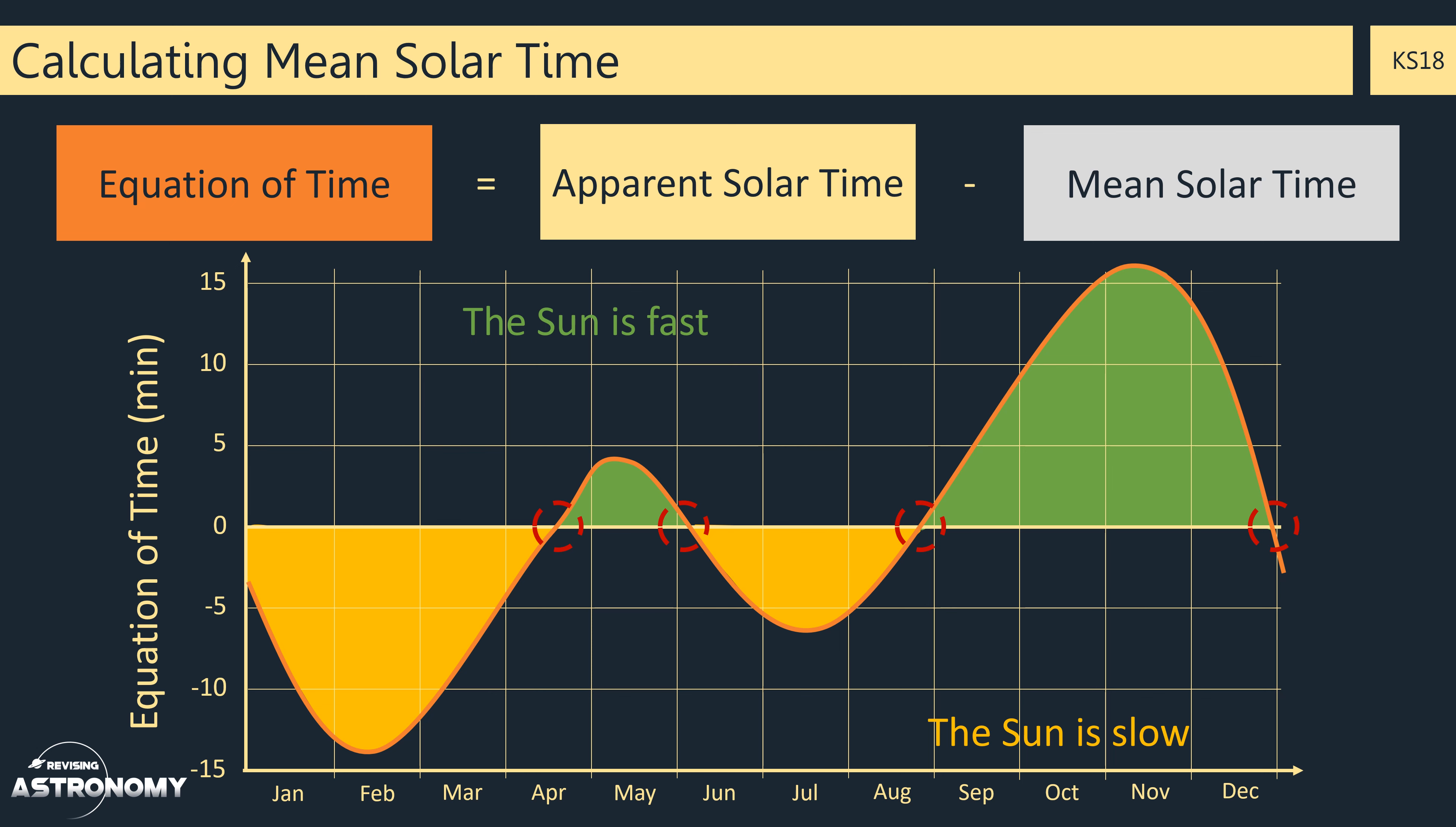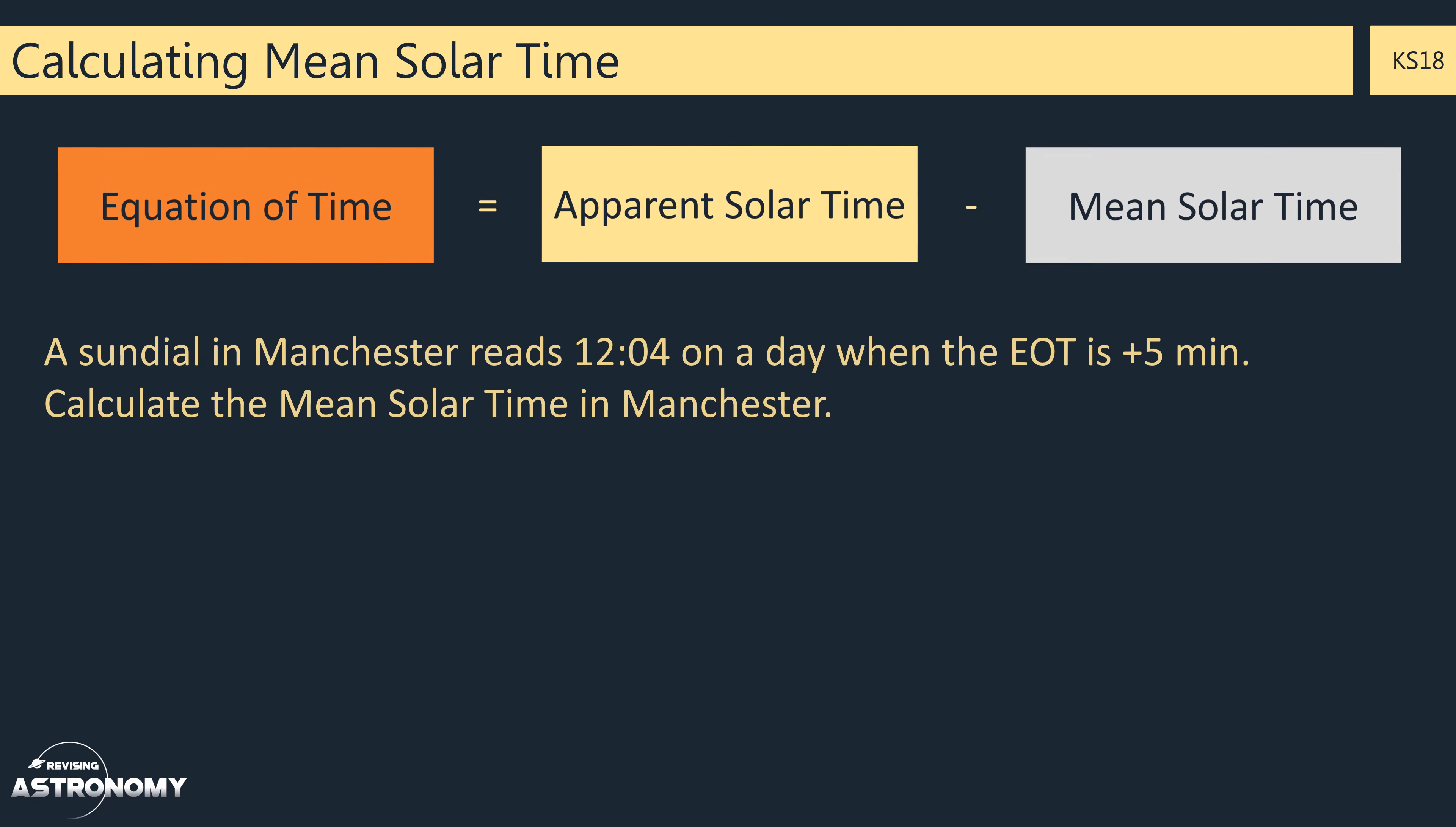So let's take a look at a couple of questions that use the equation of time to calculate the mean solar time. Here, the question states that a sundial in Manchester reads 12:04 on a day when the equation of time is plus 5 minutes. We need to calculate the mean solar time in Manchester.